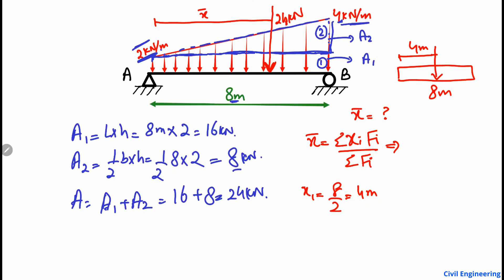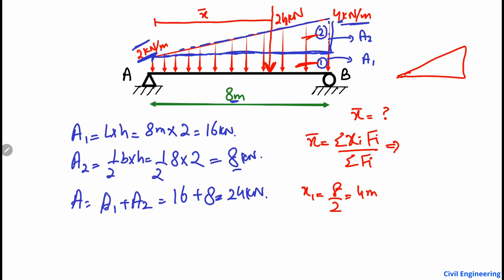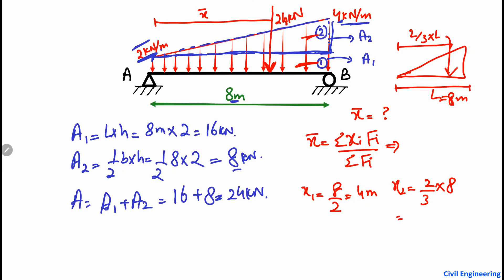For the triangle, the centroid always lies at two-thirds of the length from the start. In our case, the length is 8 meters, so x2 = (2/3) × 8 = 5.33 meters. Here, f1 corresponds to A1 = 16 kN and f2 corresponds to A2 = 8 kN.